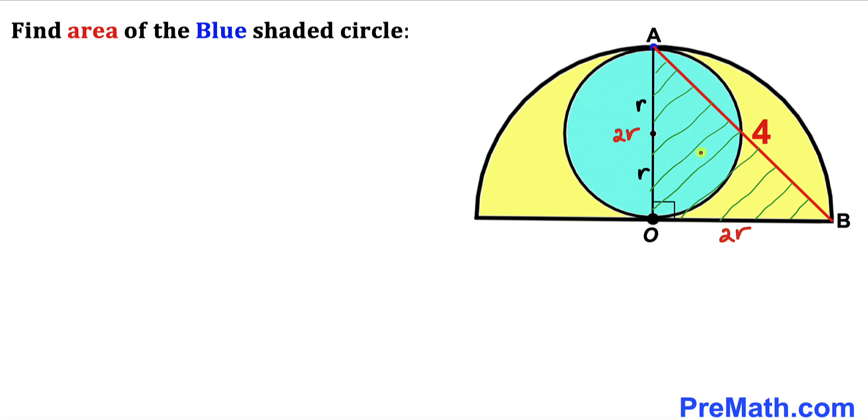And now let's focus on this triangle AOB. We know that this is a right triangle, so therefore we are going to use the Pythagorean theorem. And here's our Pythagorean theorem: a² + b² = c².